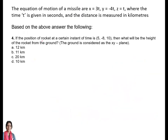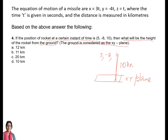Now coming to the fourth part. If the position of the rocket at a certain instant of time is (5, -8, 10), then what will be the height of the rocket from the ground? The ground is considered to be the xy-plane. The distance is at point (5, -8, 10). In the xy-plane, the x and y coordinates remain the same — only 10 is the z-difference. So 10 - 0 = 10 kilometers. D is the answer. In the xy-plane, you only consider the z-coordinate.